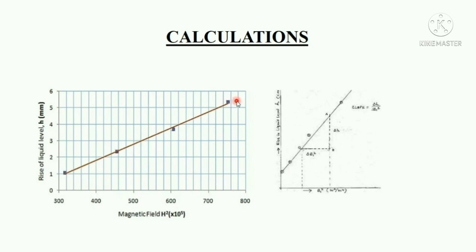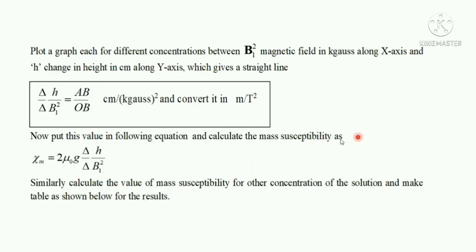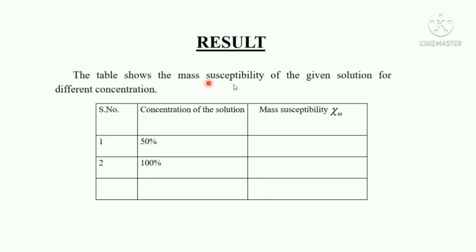This is the type of graph we obtain when we plot magnetic field squared (B²) on the x-axis versus rise in liquid level (h) on the y-axis — this is the graph plotted from actual readings taken here. We take the slope of the h versus B² curve. The slope is initially calculated in centimeter per kilo-gauss squared, which must be converted to meter per Tesla squared. We then substitute into the formula: χₘ = 2μ₀g × slope. This is calculated for both concentrations.